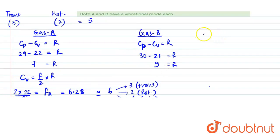Now, Cv can be written as F by 2 into R. So, Cv value for gas B is 21 into 2 divided by R. R value is 9. So, that becomes 42 by 9. This is the degree of freedom of gas B.